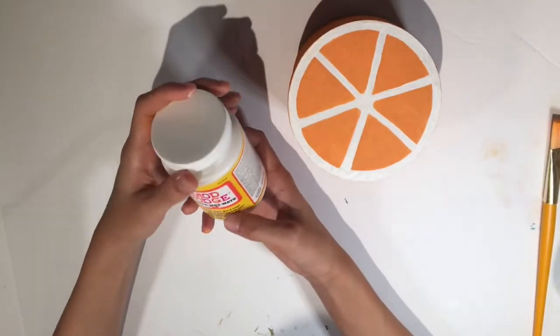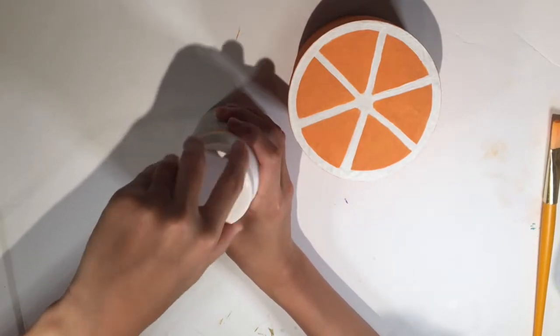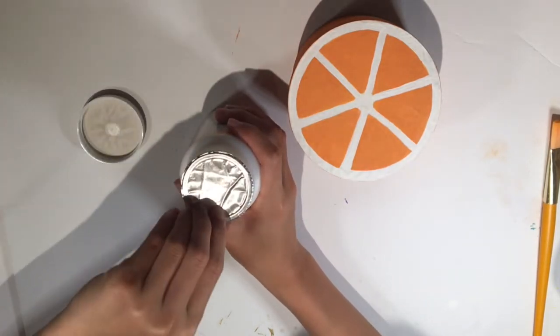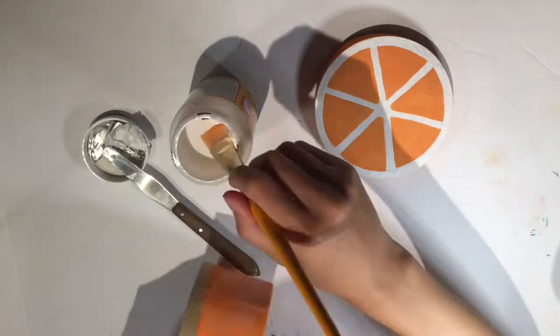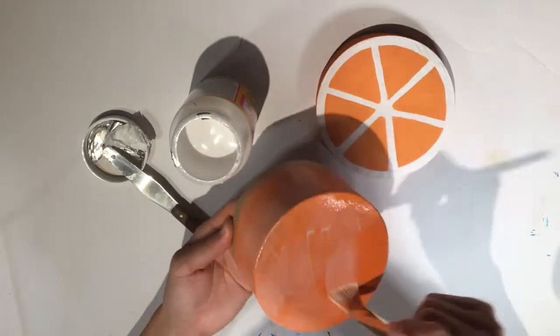Now I'm using this matte Mod Podge to coat the orange box, just to seal in all the paint, and as you can tell, I did a really good job of opening the Mod Podge. But Mod Podging is quite straightforward, you literally take a paintbrush and coat the entire thing in the Mod Podge.